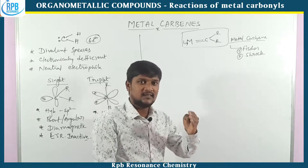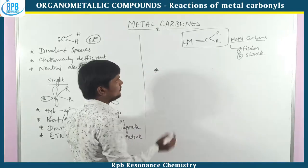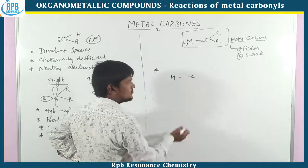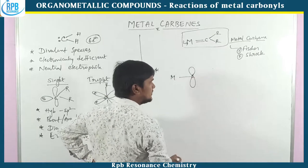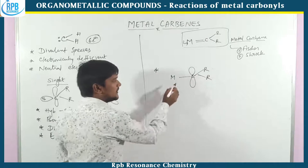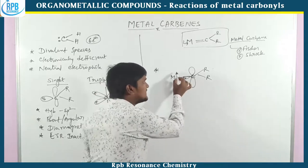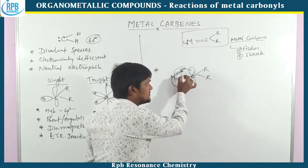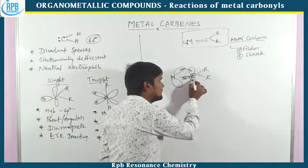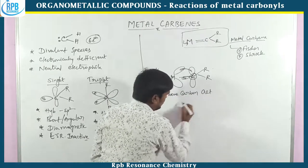That's why I will do a very simple trick to find whether it is singlet or triplet. Here is the carbene having a vacant orbital. Whenever it is in singlet formation, it has a vacant p-orbital. So that vacant p-orbital accepts electrons in the form of backbonding from the metal atom — that means the carbene accepts electrons, so it is called an electrophile. Singlet carbene acts as an electrophile.